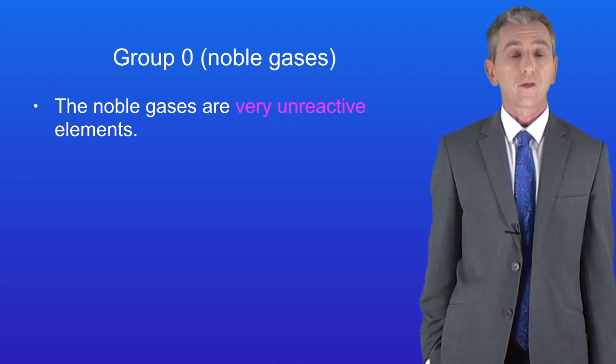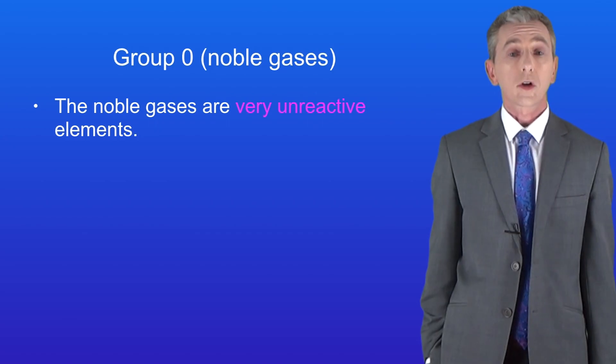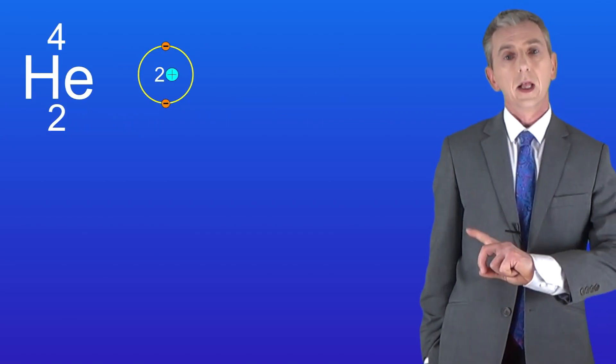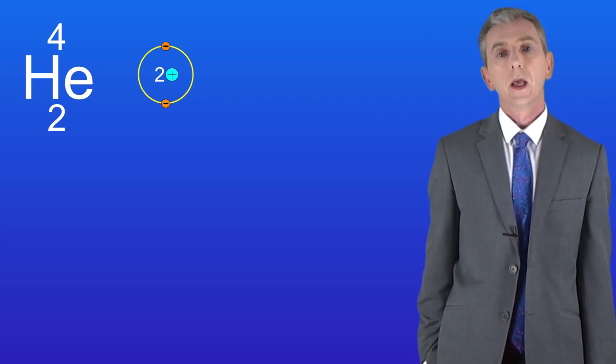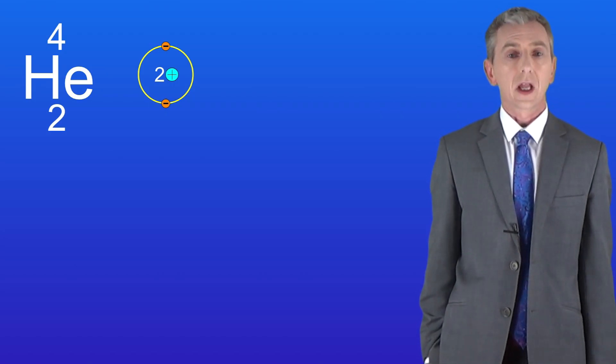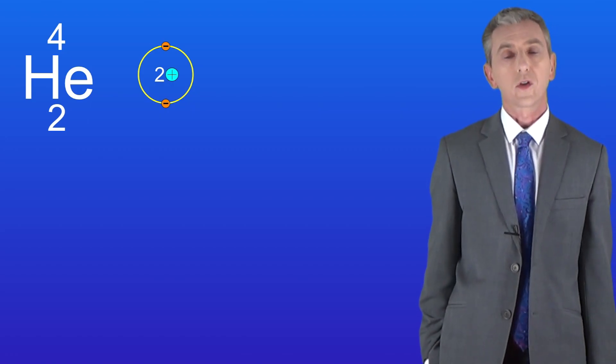So let's start by looking at the first noble gas which is helium. I'm showing you the structure of the noble gas helium here and you can see that helium atoms have two electrons in the first energy level. Remember that this energy level can hold a maximum of two electrons so this energy level is full.